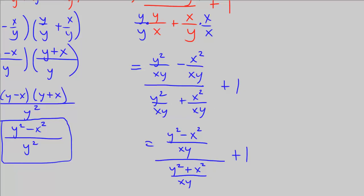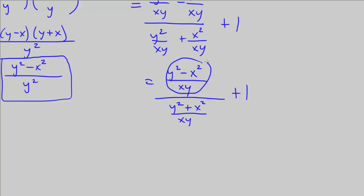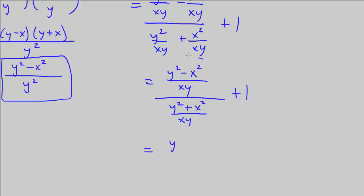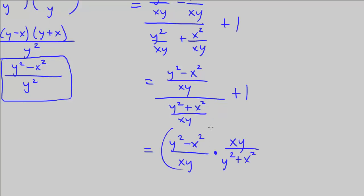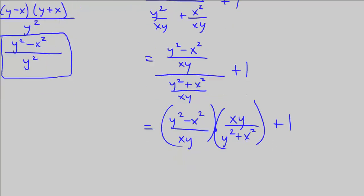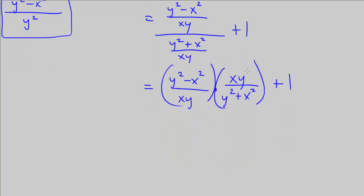Plus 1. So now we have this rational expression divided by another one, which is the same as the numerator's fraction multiplied by the reciprocal of the denominator. So that's y squared minus x squared over xy, times the reciprocal — putting the denominator in the numerator and the numerator into the denominator. When we multiply these, we can cancel the xy terms.